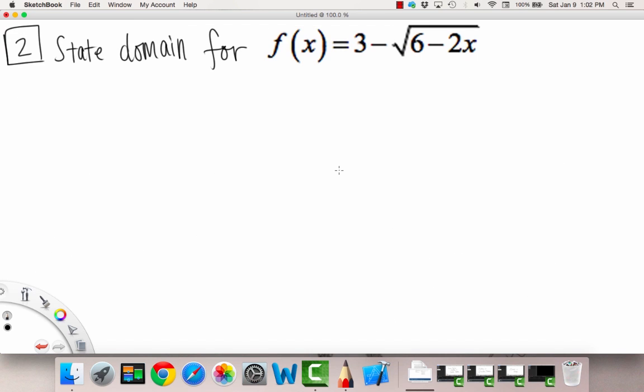Okay, number 2 says to state the domain for f(x) = 3 - √(6-2x). So the thing here is that we need to note, are there any restrictions on what x can or can't be? And the thing is we see, oh, here's a square root sign, and that's important because we can't take the square root of a negative number.